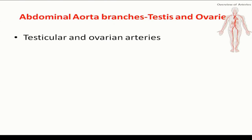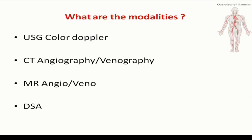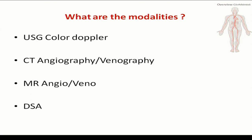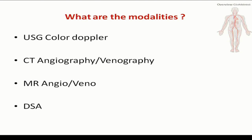The ovarian and testicular arteries are again branches of the abdominal aorta. The modalities to see all these vascular structures are: first, color Doppler, which is easily available; second, CT angiography or venography; third, MR angiography; and fourth, the gold standard — DSA, digital subtraction angiography — which our institute has, providing gold standard diagnostic as well as management of vascular intervention.